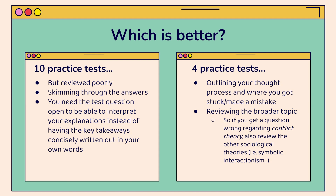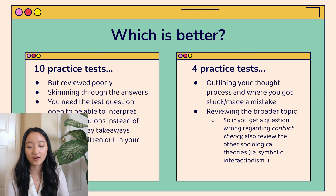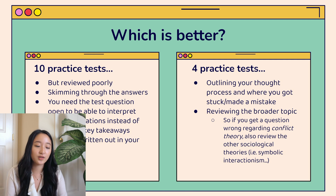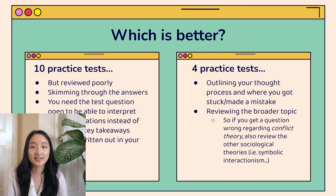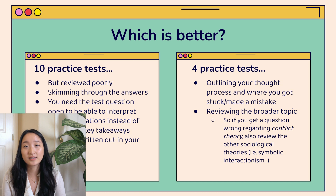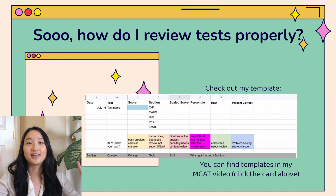For example, you might note that you need to adjust your test-taking strategy and read questions more carefully. Or if you get a question wrong on conflict theory — a sociological perspective — you'd want to review related theories like symbolic interactionism. Definitely the better approach is taking fewer practice tests but reviewing those thoroughly, really understanding where you went wrong rather than just skimming. You can find my templates for reviewing exams in my MCAT study video, linked in the cards above and in the description.